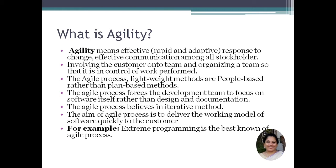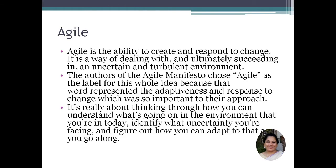The agile process forces the development team to focus on software rather than design and documentation. It is an iterative method — you get feedback from the customer, work on the product, and then rework on the product design. There is iteration after each response and adaptation. The aim of the agile process is to deliver a working model of the software as soon as possible to the customer. Extreme programming is the best known agile process. Agile is an ability to create and respond to change — the way end users adapt to and respond to your product, ultimately succeeding in an uncertain and turbulent environment.